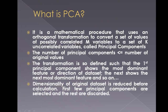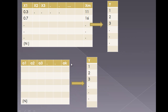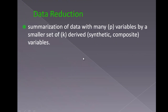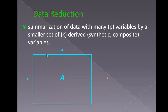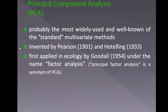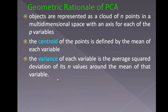The dimensionality of the original data set is reduced before calculation — the first few principal components are selected and the rest are discarded. PCA is probably the most widely used and well-known standard multivariate method for machine learning. Looking at the geometric rationale, objects are represented as a point cloud of n points in a p-dimensional space. The centroid is defined by the mean of each variable, and variance is the average squared deviation of the n values around the mean.